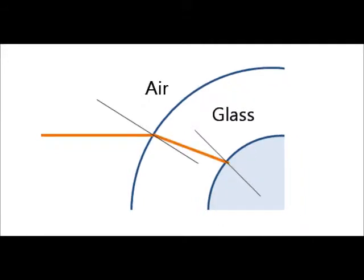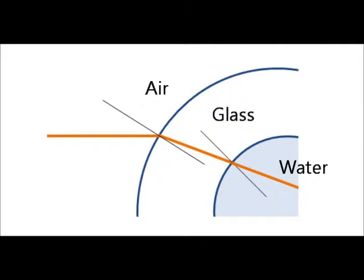Now when it comes across the boundary between the glass and the water, well the water is a lower refractive index than the glass, so now the light can speed up a bit, but again it also changes direction. Now it bends outwards before zooming off through the water.